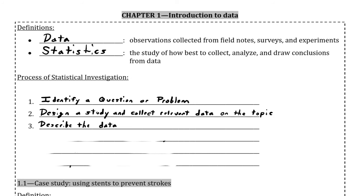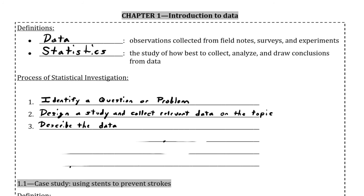Next, we will describe the data, which typically means we will summarize it with tables, graphs, or statistical calculations, such as the mean, which you will learn more about later. This step combined with step two are part of the collecting phase of statistics.